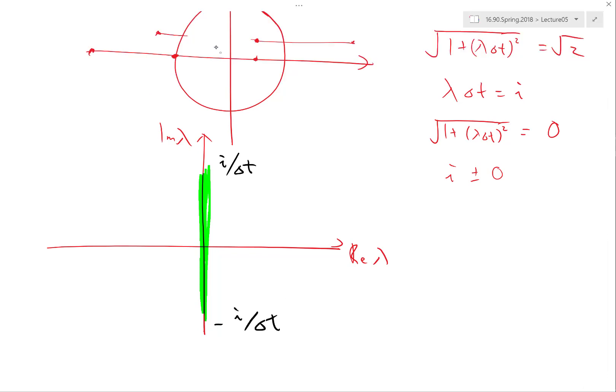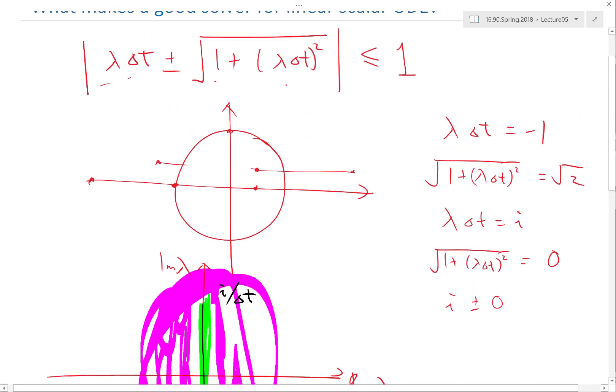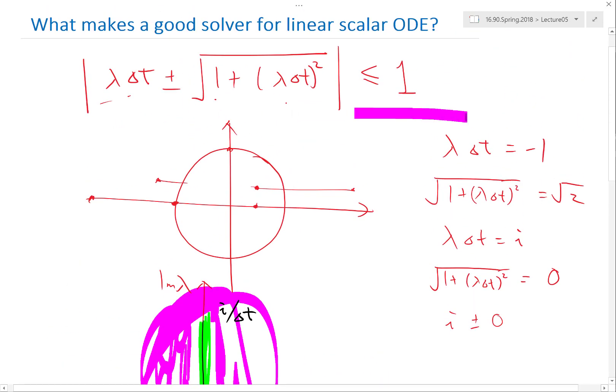Actually in the region on the imaginary axis bounded between i over delta t and minus i over delta t. Anything outside this region, including the extended part of the imaginary axis and anywhere other than this imaginary axis, would be unstable for midpoint rule. So that's because of the combination of these two criterias, right, that makes midpoint rule a very dangerous scheme to use for any system that does not have all its eigenvalues lying on the pure imaginary axis, which usually means systems that conserve a bunch of quantities like kinetic energy and things like that, like oscillating systems that don't have anything that decays.